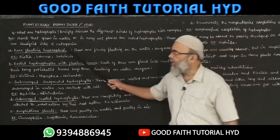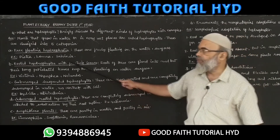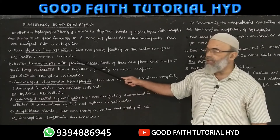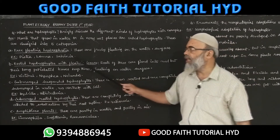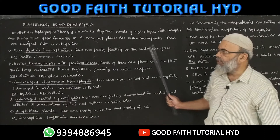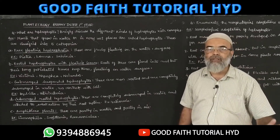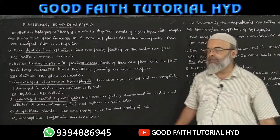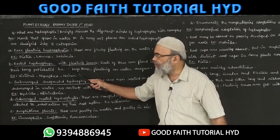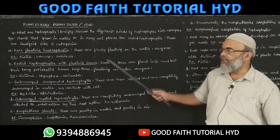These are classified into five categories. First one: free floating hydrophytes. These are freely floating on the water surface. They do not have any attachments. Examples are Pistia, Lemna, and Salvinia.